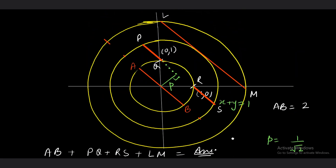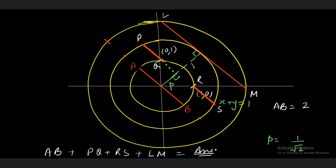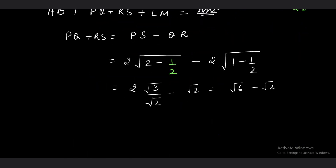LM is a tangent to the second circle and a chord of the third circle of radius √3. The perpendicular distance from the origin to the line x + y = 2 is √2, confirming it is tangent to the circle of radius √2. Using the chord formula, LM = 2√(r² − p²) = 2√(3 − 2) = 2.